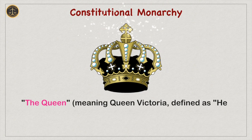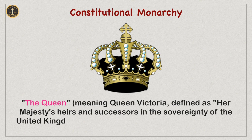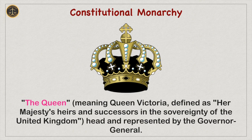Australia is headed by the Queen. Though the Australian Constitution doesn't use the term Head of State, it was intended to recognize British sovereignty. Now the term Queen of Australia is replaced as the Queen of the United Kingdom within Australia's Parliament. There is an appointed Governor-General who represents the Queen, and being the representative of the Queen, he enjoys the executive power.